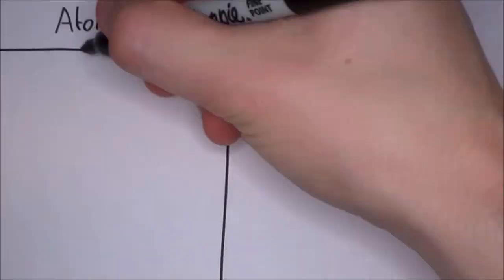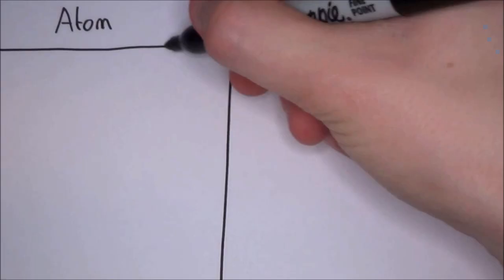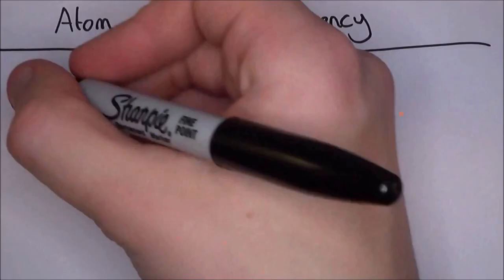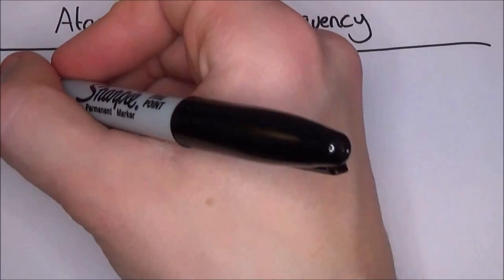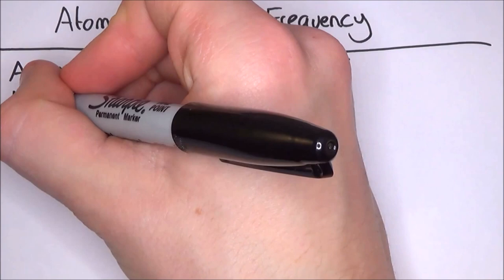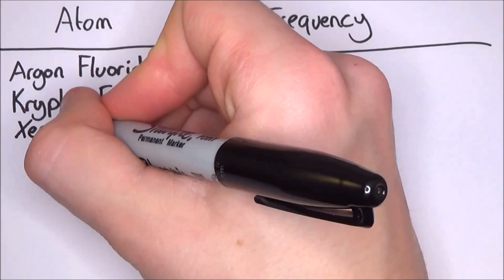The atoms that are used in lasers will give out certain frequencies of light. For example, argon fluoride will give out light in the ultraviolet range at about 193 nanometers. Krypton fluoride and xenon fluoride will also produce light in the ultraviolet end, as will nitrogen. Argon on its own will produce blue or green light depending on the other conditions.